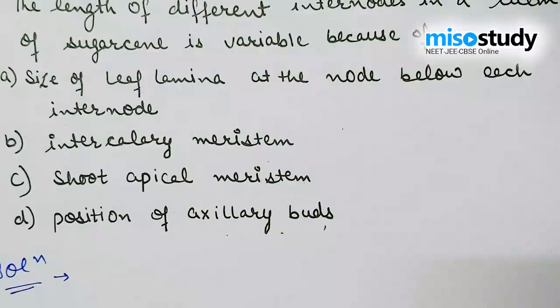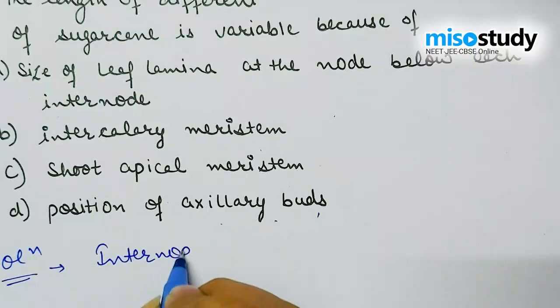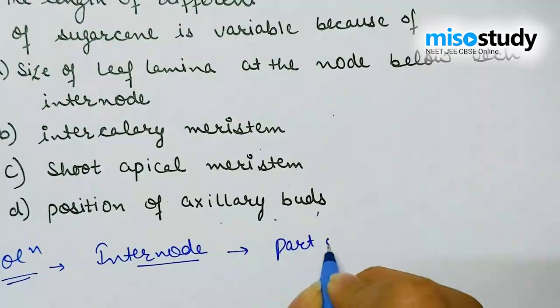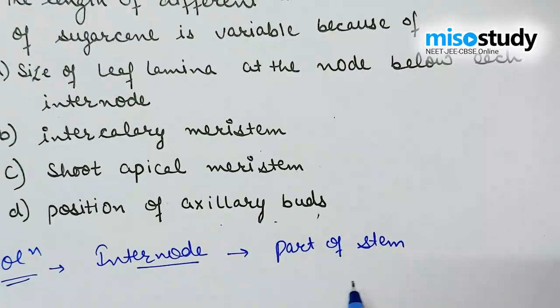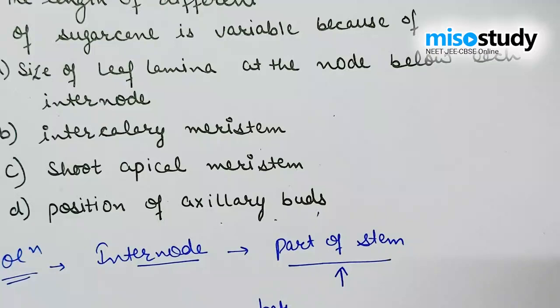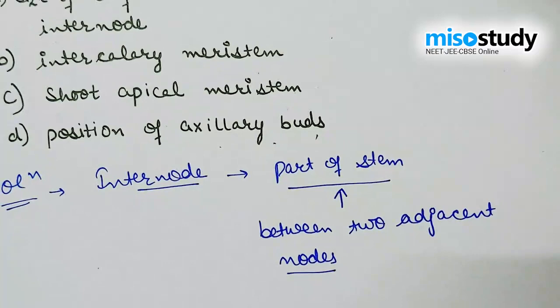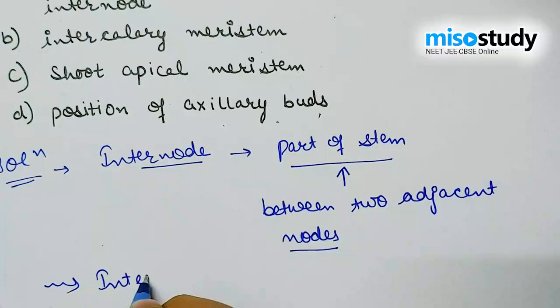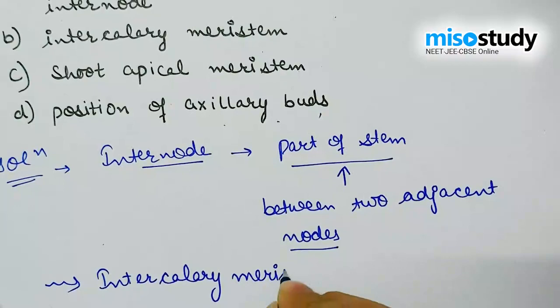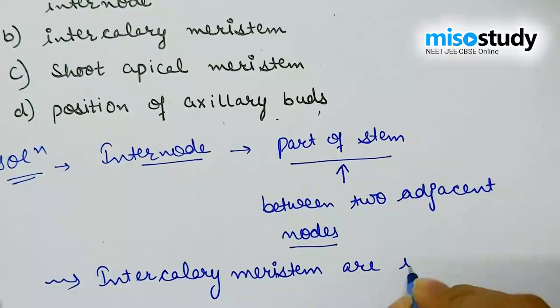To find the solution, we first discuss about the internode. An internode is a part of the stem that occurs between two adjacent nodes. There is a peculiar type of meristem known as intercalary meristem, which is internodal in position.